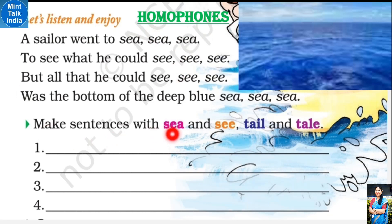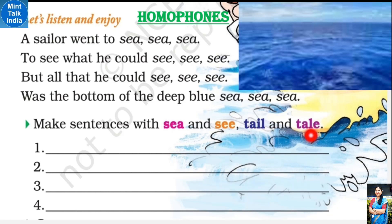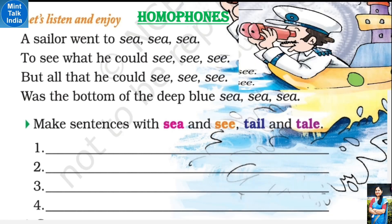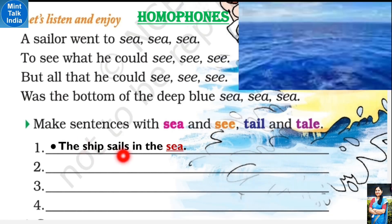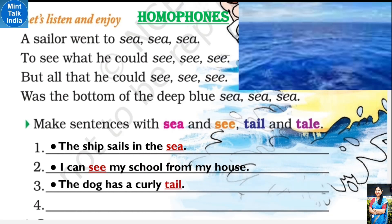Now make sentences with 'sea' and 'see'. S-E-A ka matlab hota hai samundar, S-E-E ka matlab hota hai nazar aana ya phir dekhna. T-A-I-L - 'tail' ka matlab hota hai kisi janwar ki poonch. T-A-L-E - 'tale' ka matlab hota hai kahani, story. Sentences: The ship sails in the sea. I can see my school from my house. The dog has a curly tail. And my mother has told me many fairy tales.